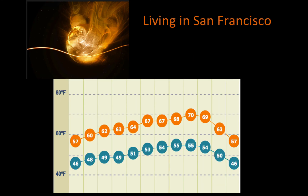Let's consider the average temperature in San Francisco. Notice it goes from 57, 60, 62, 63, 64, 67, 67, 68, 70, 69, 63, 57. The temperature in San Francisco is very moderate.